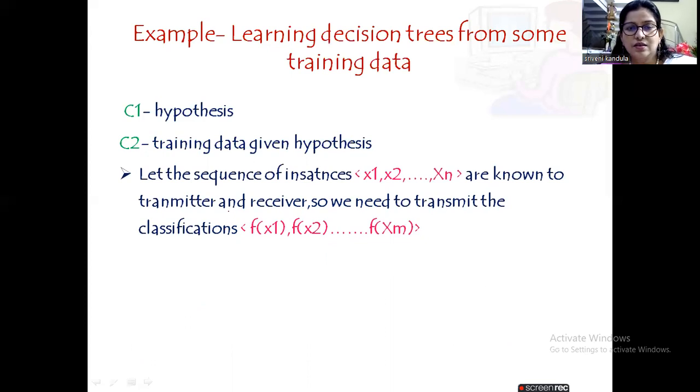When they already know what is the example data or what are the training instances, it is only required to transmit the classification. Thereby we are reducing the length of the data or the number of bits that are to be transmitted. Ultimately that is our aim: we want to minimize the number of bits that are to be transmitted.